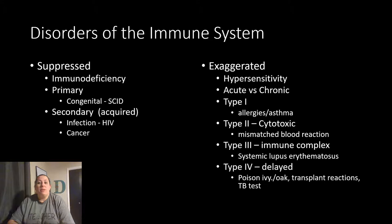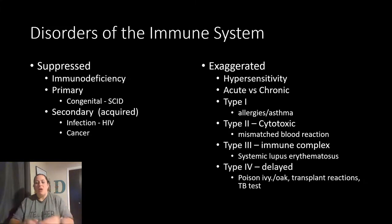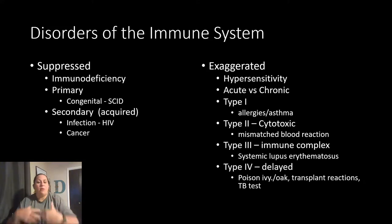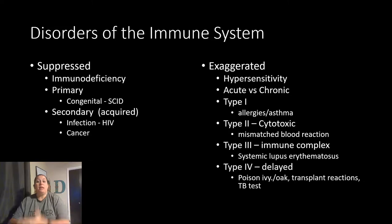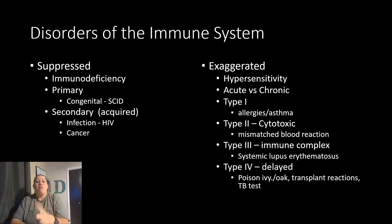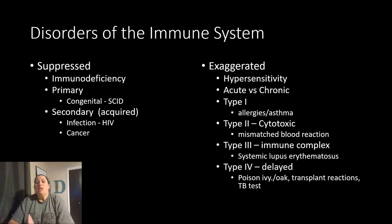Type 4 is a more delayed type of reaction — like poison oak or ivy, where you've been exposed and several hours or a day later you get the rash. We also see this sometimes with transplant reactions where rejection doesn't happen right away, and the organ gets weaker and weaker over time until it no longer functions. Another example is a TB test — you get injected and have to come back in several days to see if a reaction has taken place, actually using this type of hypersensitivity as a diagnostic tool.